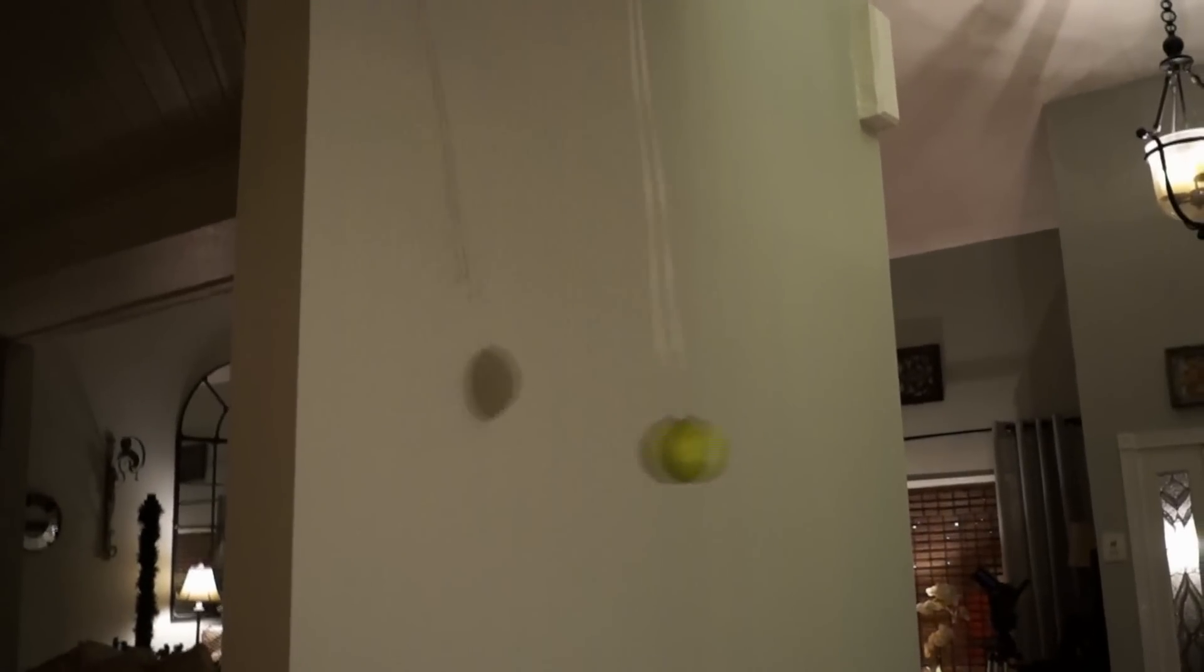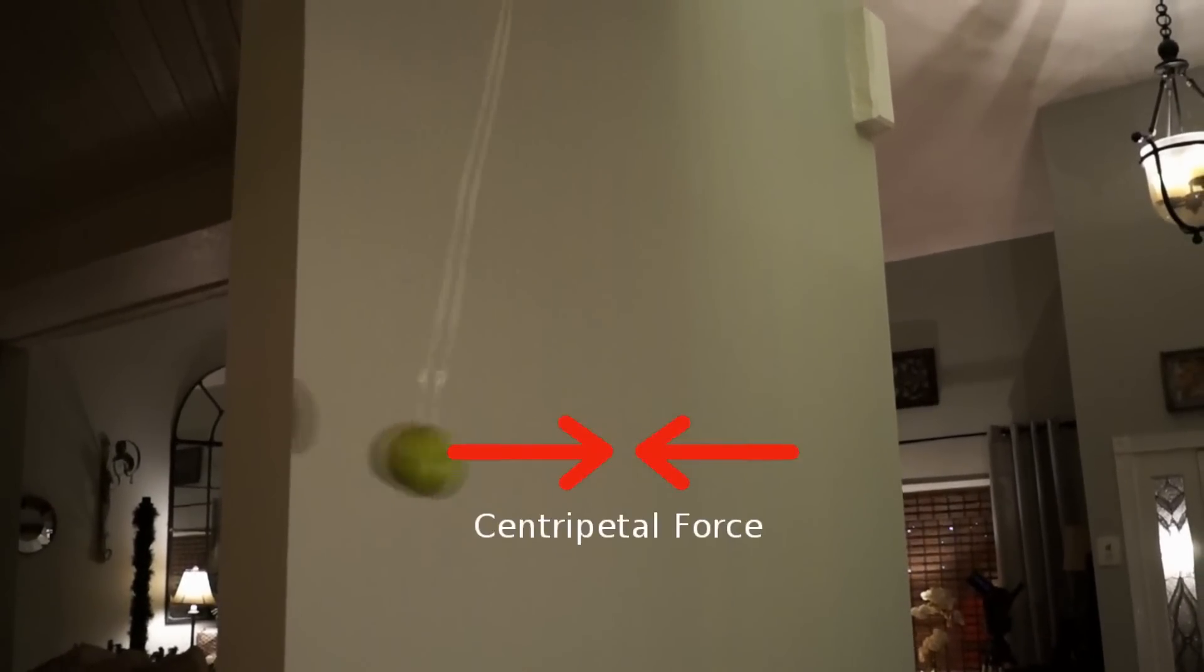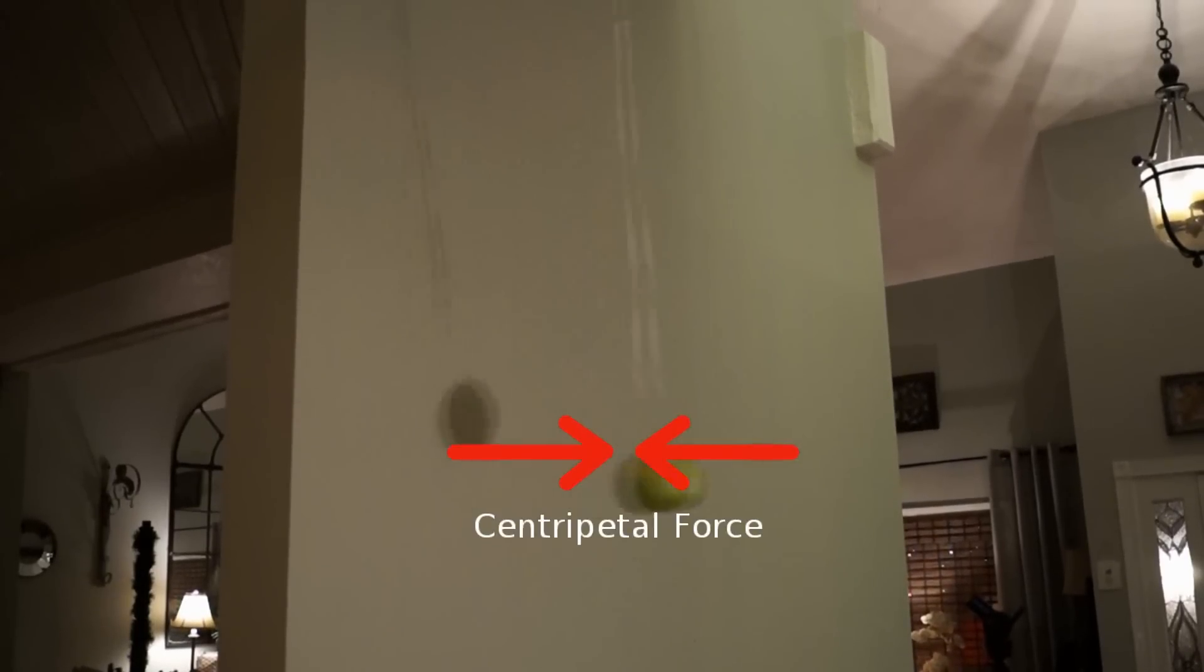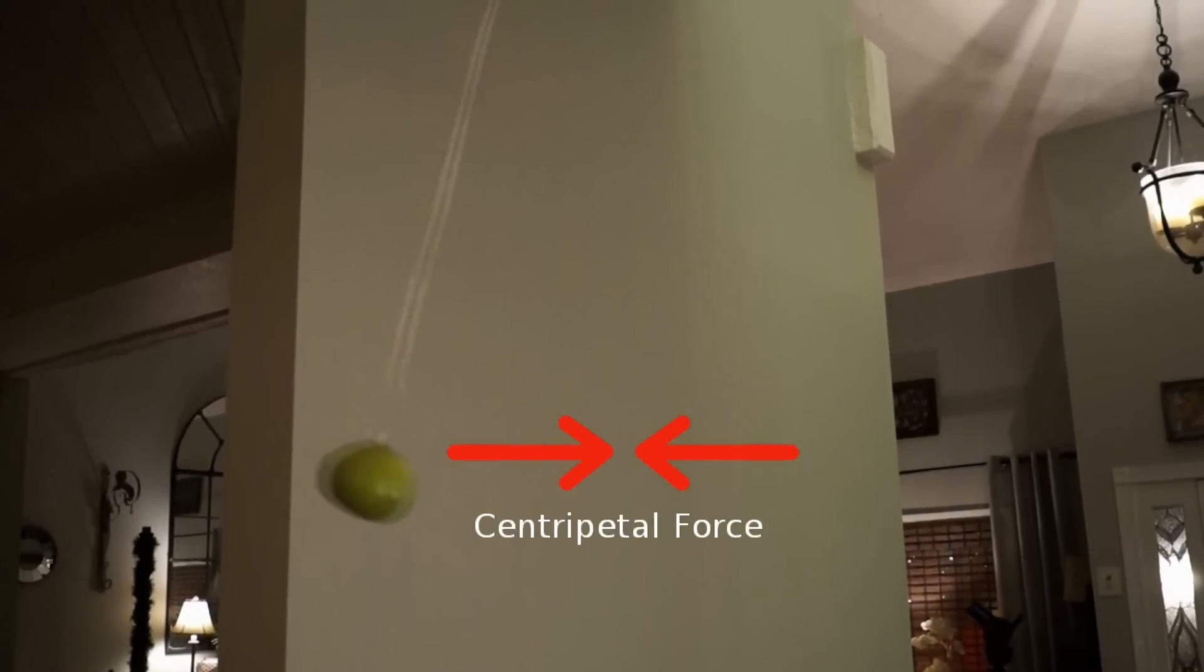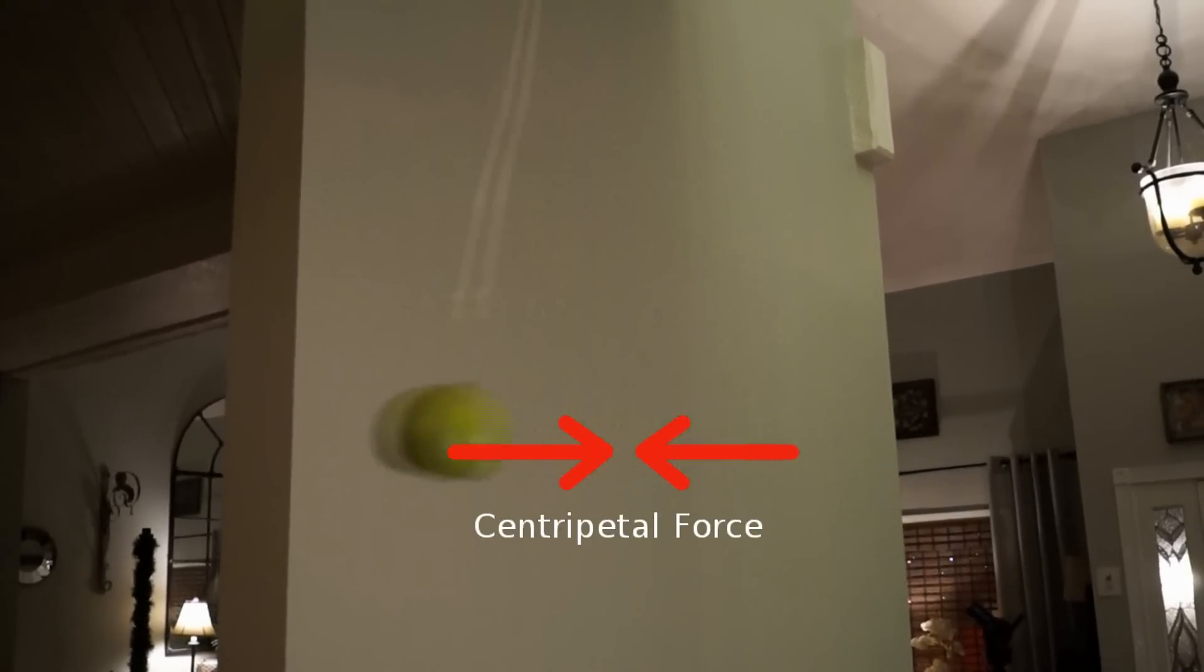Centripetal force is the inward force. In this case, that's being applied by the string. In an orbit, that would be gravity. So if this were like the Moon going around the Earth, the Earth would be in the center and it would be pulling on the Moon, pulling it towards the center.